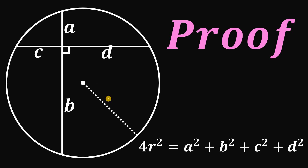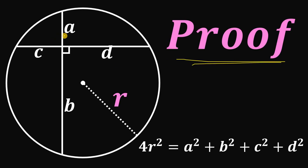Now, let R be the radius of this circle. Our goal in this video is to show you the proof that relates the segments A, B, C, D, and the radius R — namely, 4R squared equals A squared plus B squared plus C squared plus D squared. So let's begin.